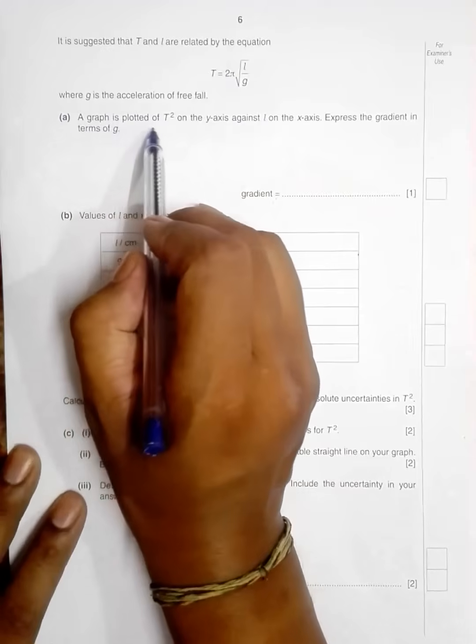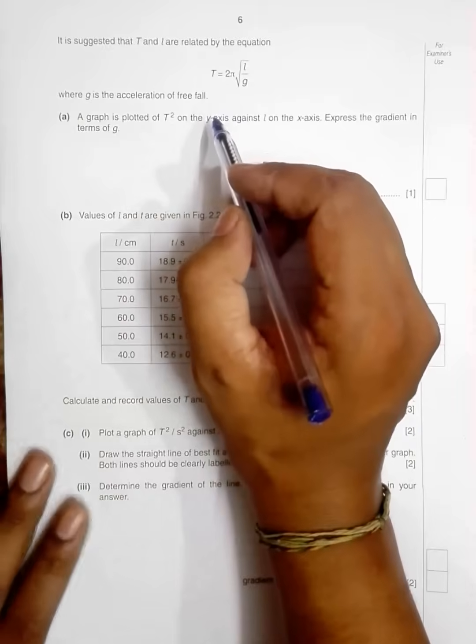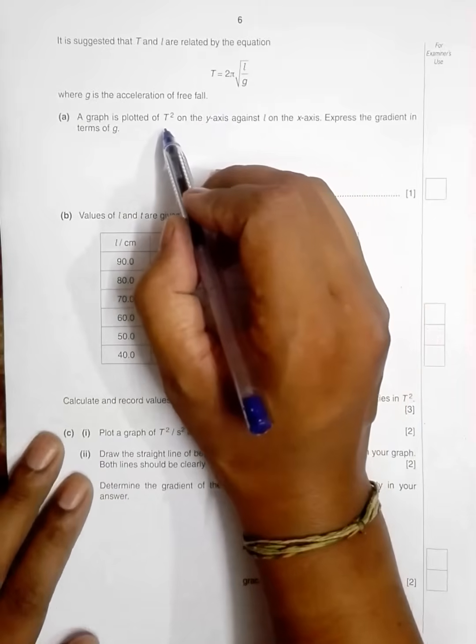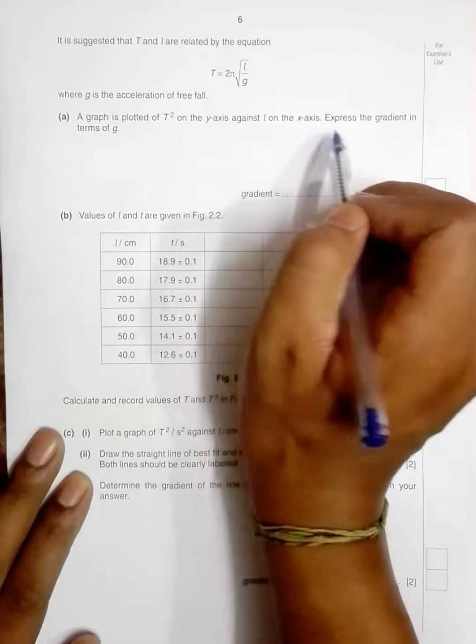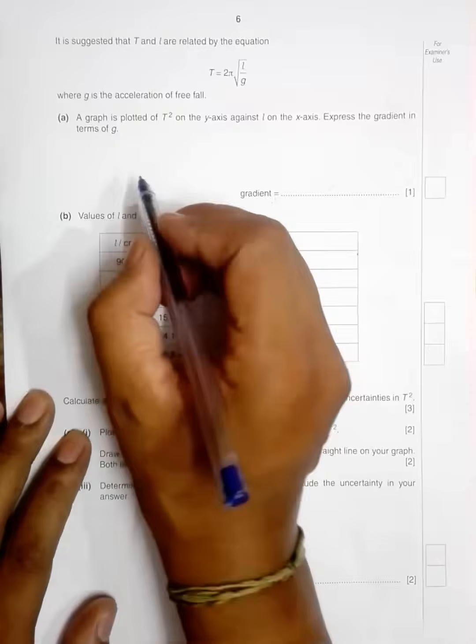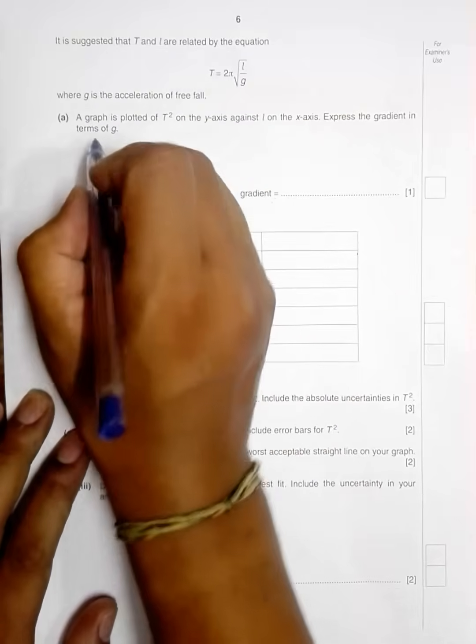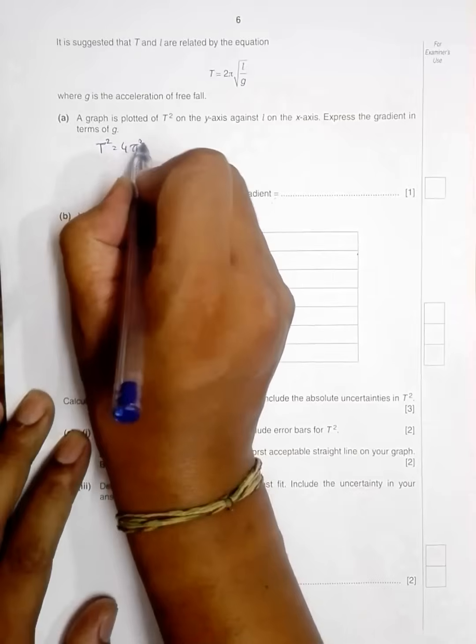A graph is plotted of T² on the y-axis against L on the x-axis. Express the gradient in terms of g. So we have to change the equation. If I square this thing I will have T² = 4π²L/g. I can write it as T² = (4π²/g)L.